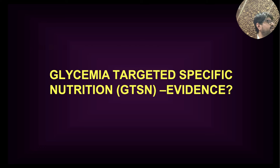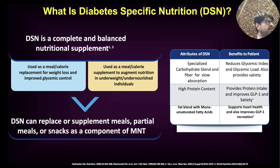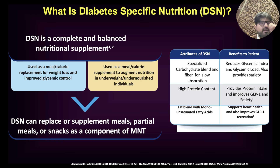When replacing a meal with a supplement, it should be tailored to the patient's needs. If the patient has diabetes, the nutritional supplement should contain a low glycemic index, complex carbohydrate. It should have a good amount of protein and low fat. If a high protein diet is prescribed, the supplement should have a high amount of protein. What kind of meal replacement you do depends on what kind of patient you are dealing with.